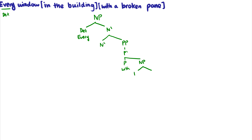Now 'a broken pane.' 'A' is a determiner, so that's going to be daughter of an NP, sister to an N-bar. Remember that 'broken' is an adjective and is a modifier, so it is also an adjunct — daughter of an N-bar and sister to an N-bar. And 'pane' is just going to be the head of the noun phrase. So that is what the tree for 'with a broken pane' looks like.